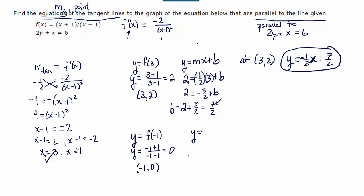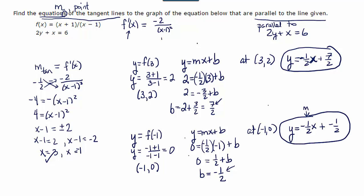So plugging into y = mx + b, we're going to have 0 = our slope of our tangent line, -½, times our x coordinate, -1, plus b. This means 0 = ½ + b. So in this case, b = -½. So we just found that at the point (-1, 0), that the equation of the tangent line is y = -½x + (-½). So there's the second equation of the tangent line.